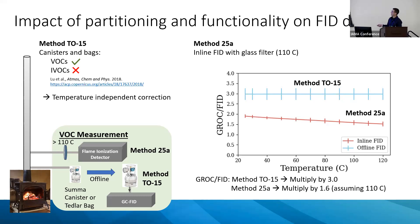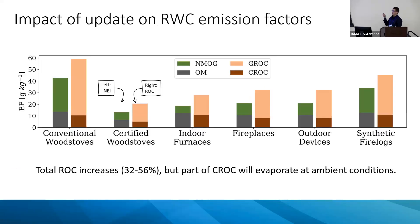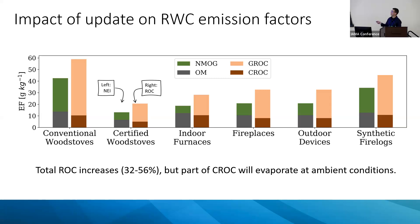We examined the NEI to find all references underlying emission factor data for each wood-burning subsector, identified test conditions and methods used, and converted NEI-style MOG and OM emission factors into new ROC-based CROC and GROC emission factors. Across all subsectors, total ROC increases by 32 to 56%, depending on subsector. The condensable CROC is lower in all cases than the original OM, because there will still be evaporation under ambient conditions (~20-25°C), with further decreases unless it is very cold outside — which it often is when running a wood-burning stove.